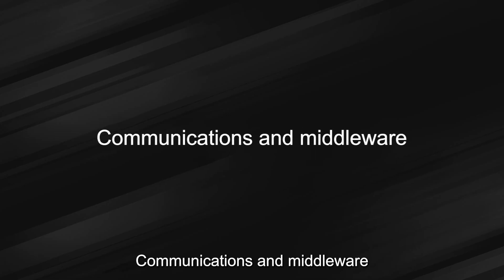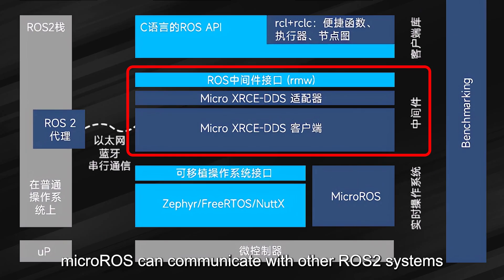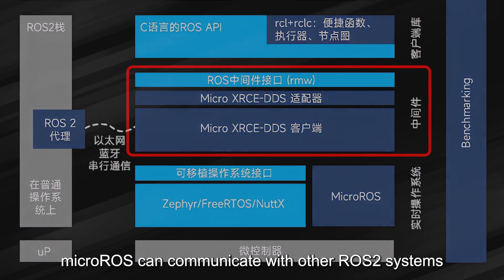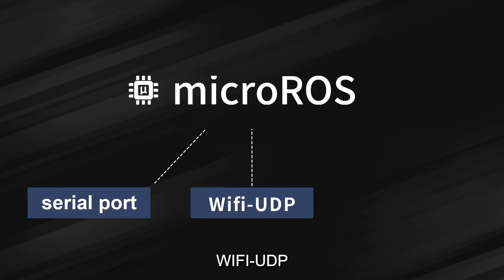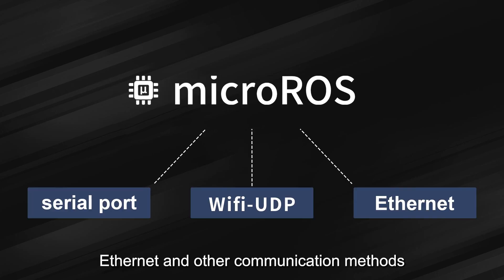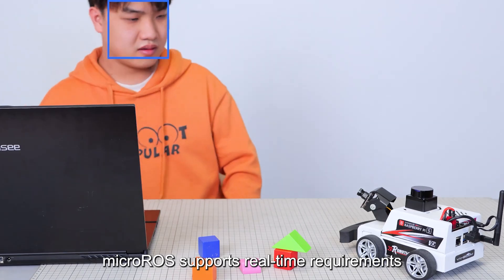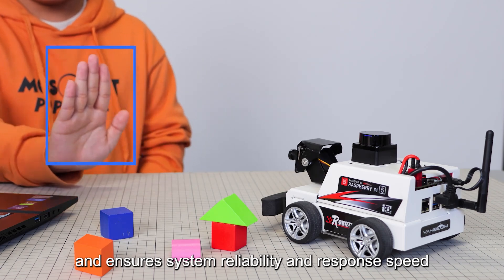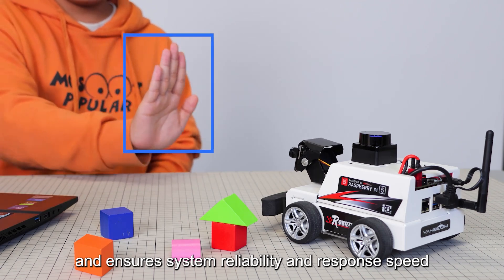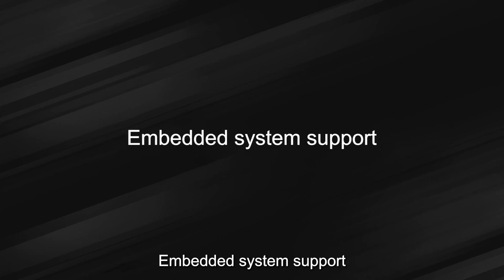Communications and middleware: micro-ROS can communicate with other ROS 2 systems. It supports serial port, Wi-Fi, UDP, Ethernet, and other communication methods. Real-time performance: micro-ROS supports real-time requirements and ensures system reliability and response speed.